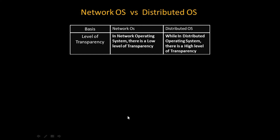On the basis of transparency: in a network operating system there is a low level of transparency, because each user has their own privacy and separate resources on their computer. In a distributed operating system there is a high level of transparency, since all nodes share the same hardware resource and CPU, so processes can easily be shared among computers.